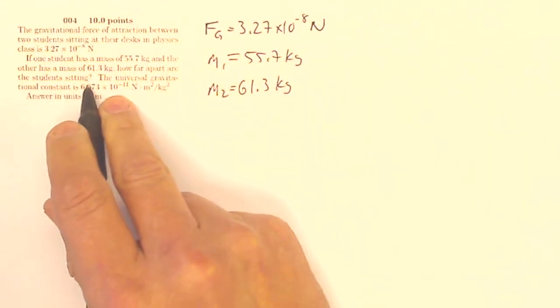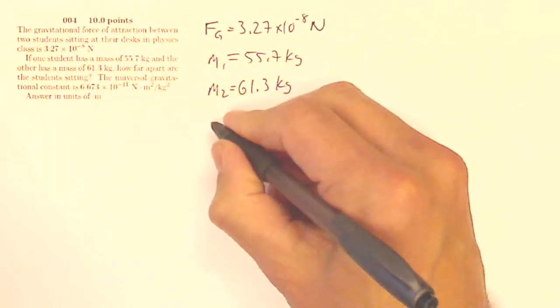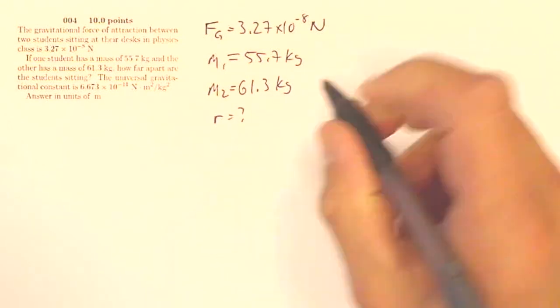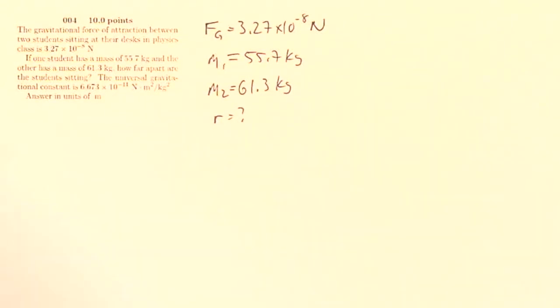How far apart are the students sitting? Answer in units of meters. So I'm looking for R, and they're telling me that G is 6.673 times 10 to the minus 11.